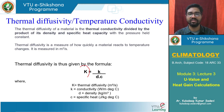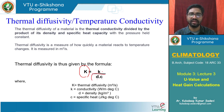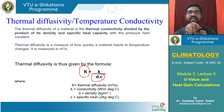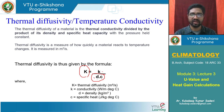Thermal diffusivity (capital K) equals conductivity divided by density times specific heat of the given material. If specific heat is high, diffusivity will be low because the material can store more heat and does not dissipate it quickly. If density is high, diffusivity will also be lower.